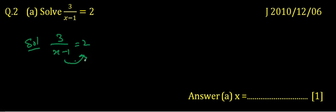We may shift x minus 1 from left to right, and it becomes denominator to numerator. So it can be written as 3 equals 2 bracket x minus 1. We insert the bracket because 2 must multiply with both terms.